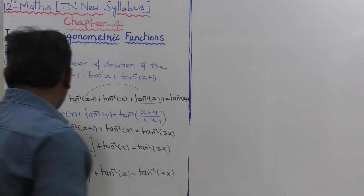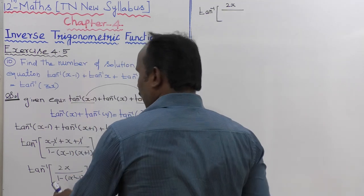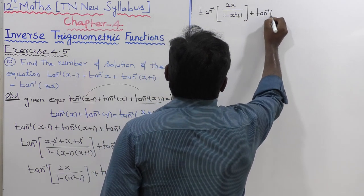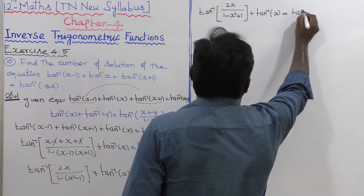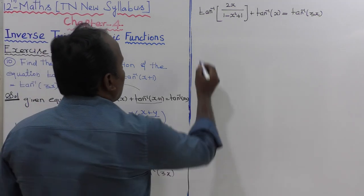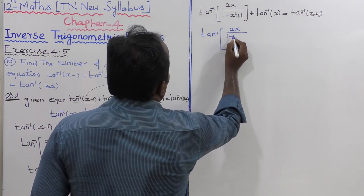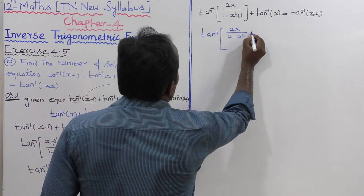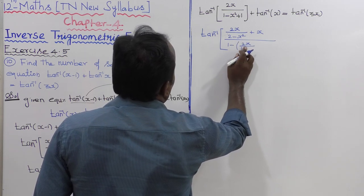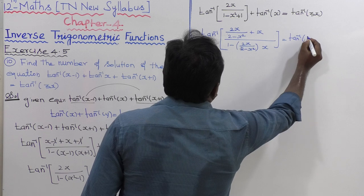Simplifying: tan inverse of [2x divided by (2 minus x squared)] plus tan inverse of x equals tan inverse of 3x. Now applying the addition formula again to these two terms: tan inverse of [(2x divided by (2 minus x squared)) plus x], whole divided by [1 minus (2x divided by (2 minus x squared)) times x], equals tan inverse of 3x.